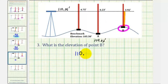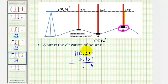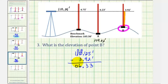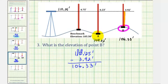So we have 110.25 feet minus 3.92 feet. Bring down the decimal point and subtract from right to left: five minus two is three. Here we borrow all the way from the tens place value — change the one to a zero, giving ten ones, then exchange a one for tenths, making this nine and twelve in the tenths place. Twelve minus nine is three; nine minus three is six; zero in the tens place; one in the hundredths. So the elevation at point B is 106.33 feet, or 106 and 33 hundredths feet. Notice how point B is higher than point A, and the elevation is greater at point B than at point A.